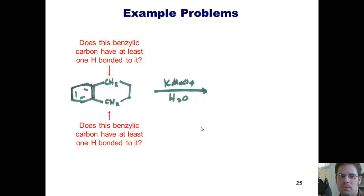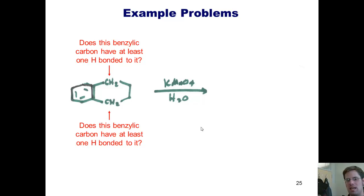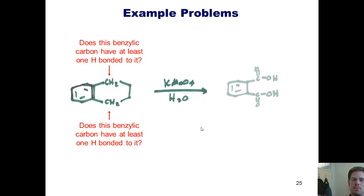It's this one. So we have to ask ourselves: does this benzylic carbon also have at least one hydrogen bonded to it? The answer is yes. Hence, when we run this reaction with KMnO4/water, what occurs is both of these benzylic carbons are converted to benzylic acid. The final product I end up getting is di-benzylic acid.